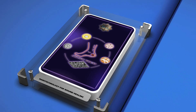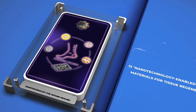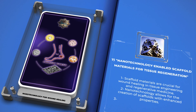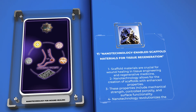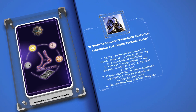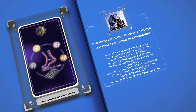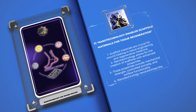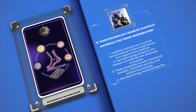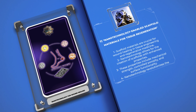In the field of tissue engineering and regenerative medicine, scaffold materials are of utmost importance for wound healing. Thanks to nanotechnology, we can now create scaffolds with extraordinary characteristics, including better mechanical strength, controlled porosity, and surface functionality. These enhanced properties are vital for promoting cellular adhesion, migration, and ultimately the formation of new tissue. By harnessing the power of nanotechnology, we can revolutionize the way we approach wound healing and improve patient outcomes.